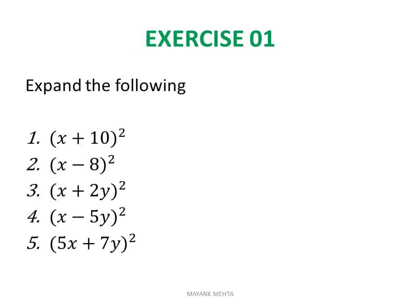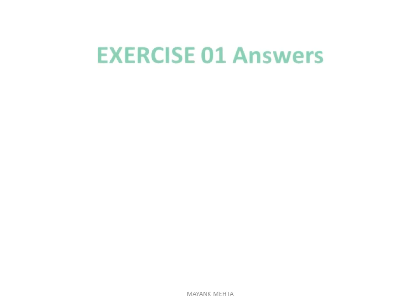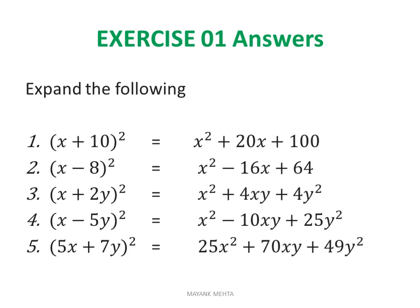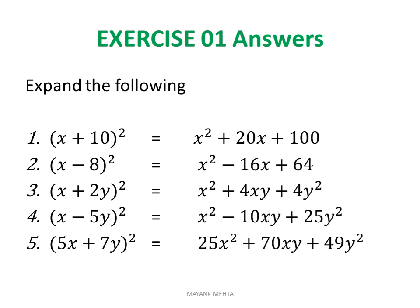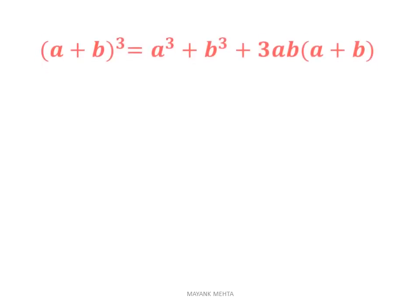Here is Exercise 1 — expand the following. You can pause the video, note down the questions, and solve them. In the next slide we will discuss the answers. Here are the answers of Exercise 1 — for example, (x+10)². Follow the identity and solve it. You can verify your answers, check how many are correct and how many are wrong. Make sure you follow the sign correctly and square the terms correctly.